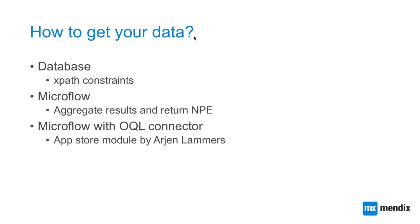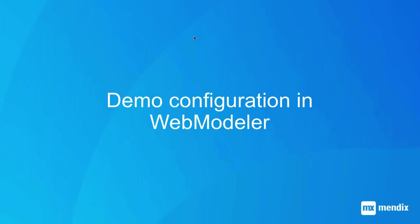There are two ways of providing your data. From a database, you can enter XPath constraints in the charts, or you can use a microflow that fetches data — perhaps even doing some aggregation — and returns non-persistent entities. Another useful solution is the OQL connector module created by Rien Lammers, where you can map OQL statements to non-persistent entities and show these in your charts.